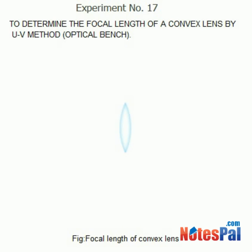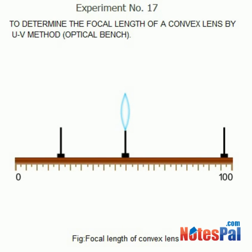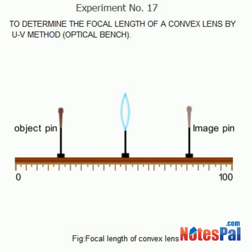A convex lens generally forms a real image. The position of the real image of the object pin is located by using an image pin by the hit-and-trial parallax inspection method. The distance of the object from the lens is the object distance, and that of the image from the lens is the image distance.